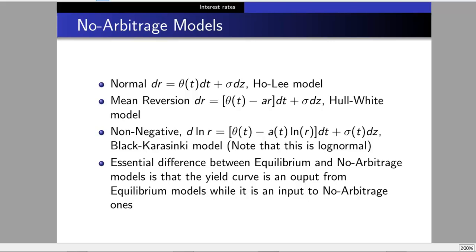The essential difference: the yield curve is an output from equilibrium models—we set a, b, and σ and generate yield curves. For no-arbitrage models, the yield curve is an input.